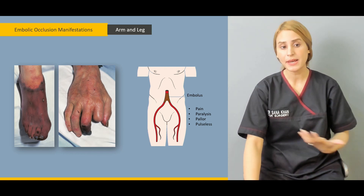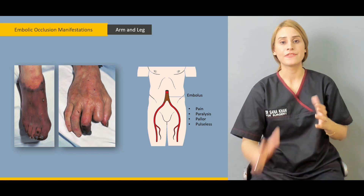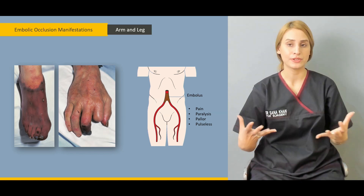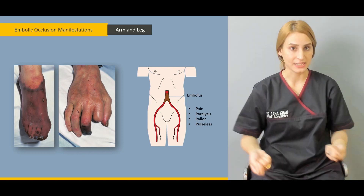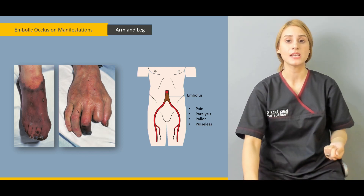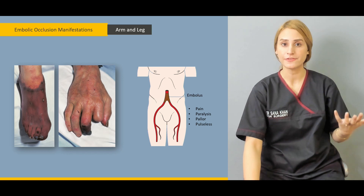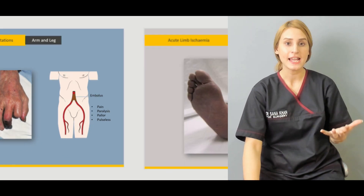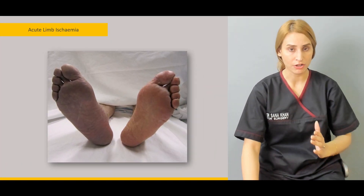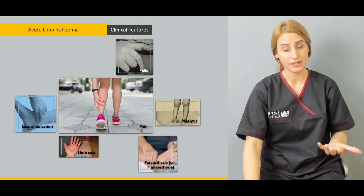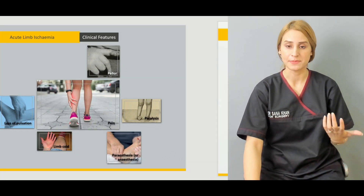We'll be talking about the manifestations of embolic occlusion — how the patient develops acute limb ischemia and what the symptoms would be. We will also be talking about the five P's, which are very important whenever you are investigating or asking about acute limb ischemia.